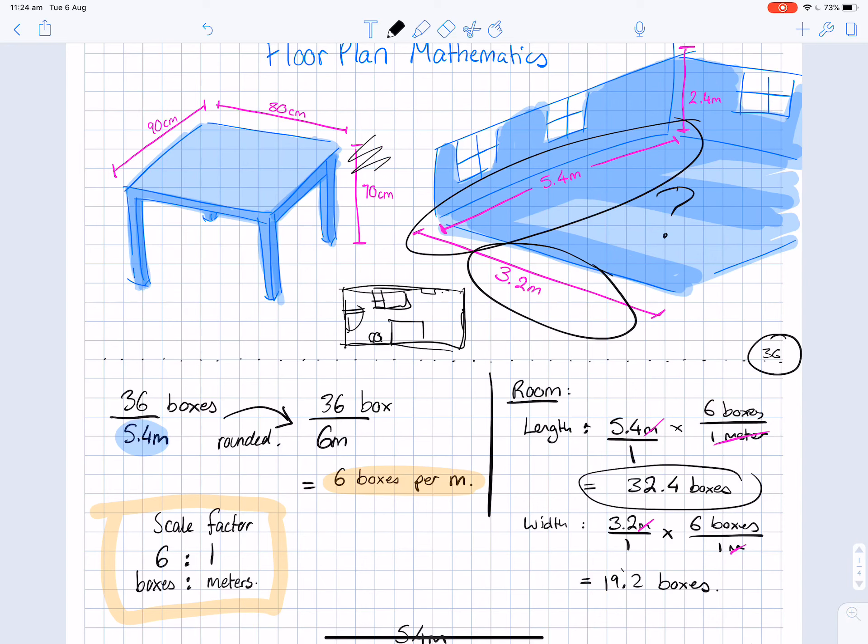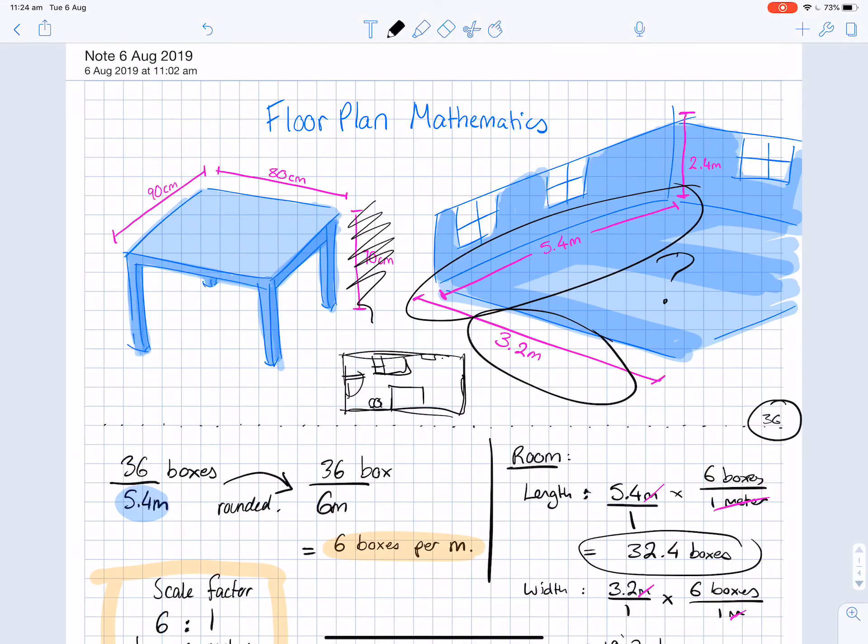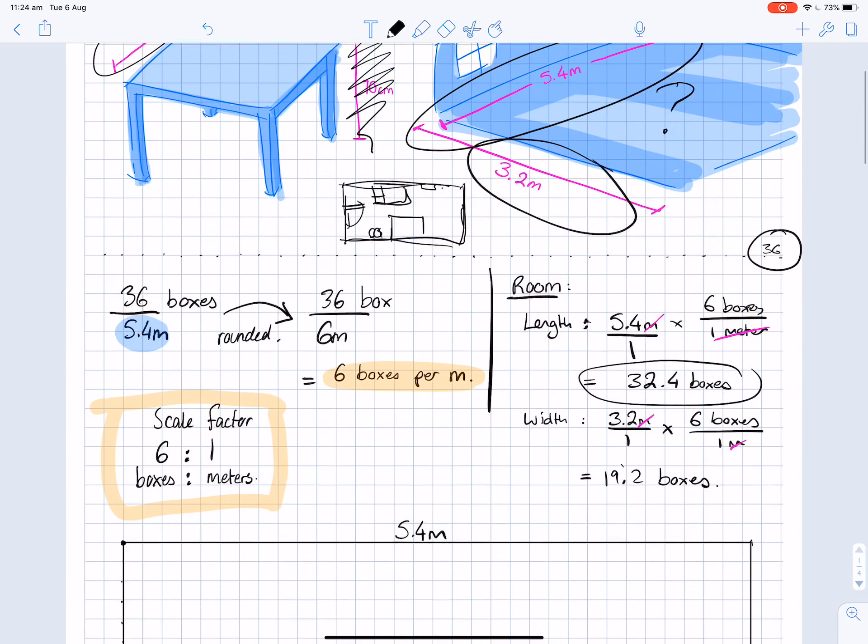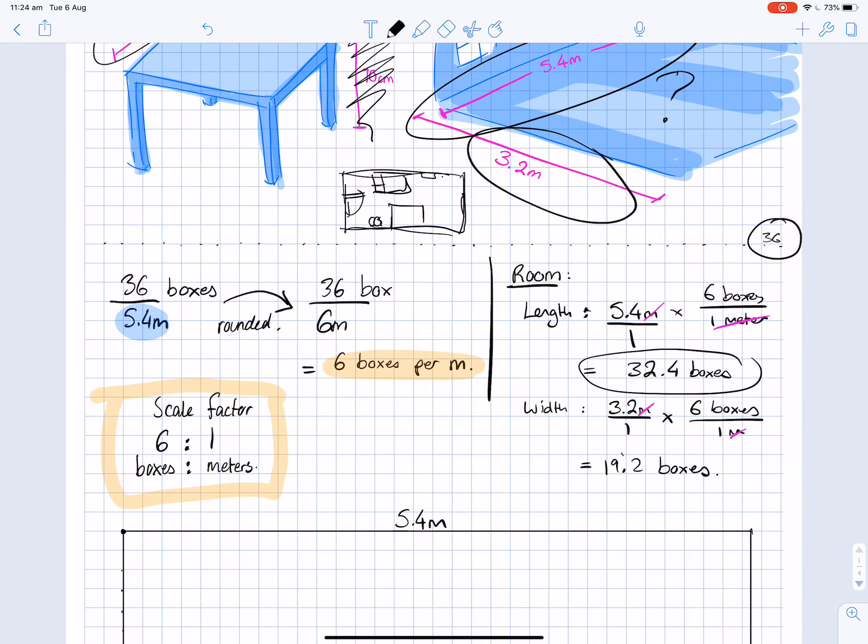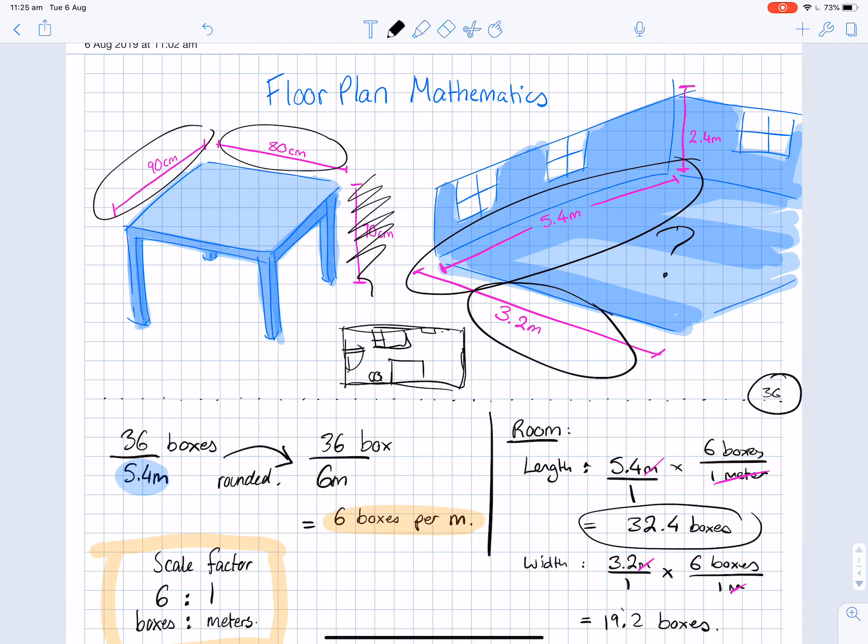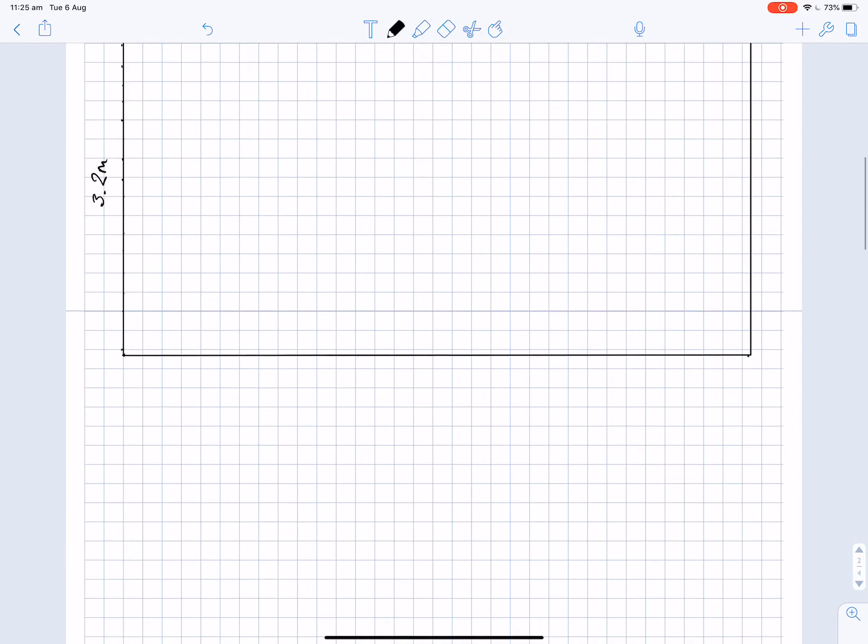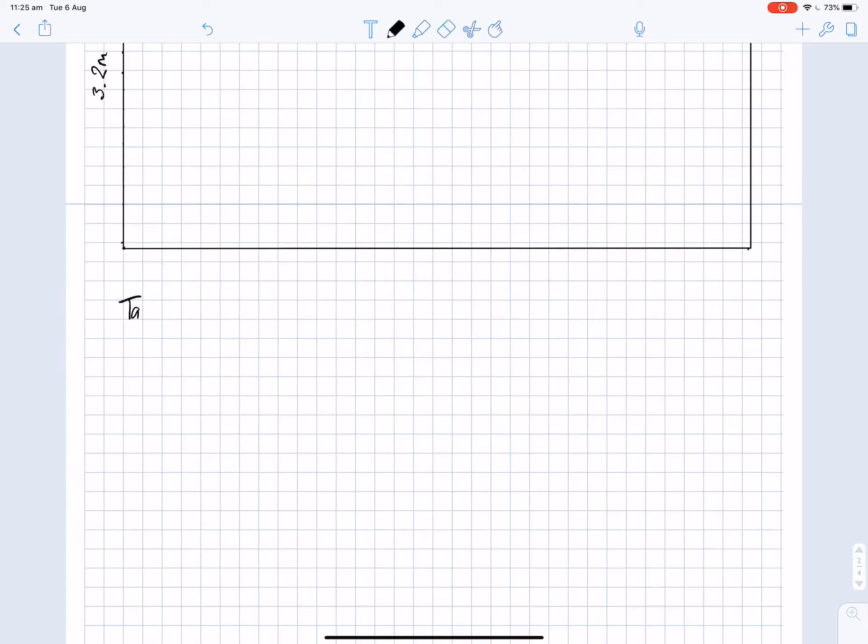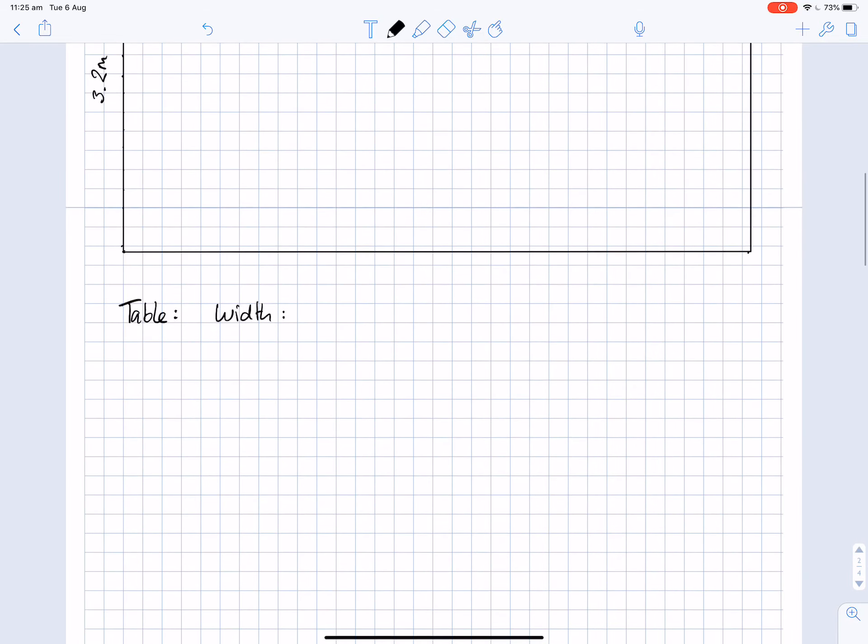I'm going to repeat the same process of scaling down this item here. It's 90 by, because we're looking from above, I don't actually need the height of the table. That's not really relevant for this part of the maths. I'm going to look at these two numbers here. Obviously they are in centimeters, but I based my scale factor in meters. So I need to convert these. So this basically ends up being 0.9 meters and this becomes 0.8 meters.